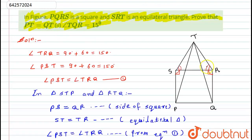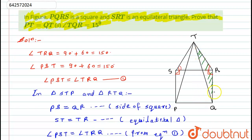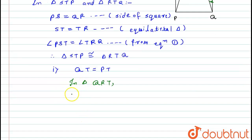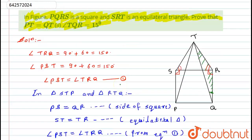Now for the second part, let's consider triangle QRT. Here, QR equals SR because PQRS is a square and its sides are equal. But SR is also a side of the equilateral triangle, so SR equals TR. Therefore QR equals TR, which means triangle RTQ is an isosceles triangle. In an isosceles triangle, the two base angles are equal, so angle RQT equals angle QTR.